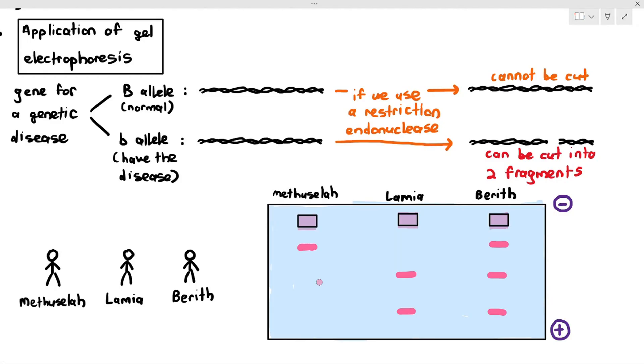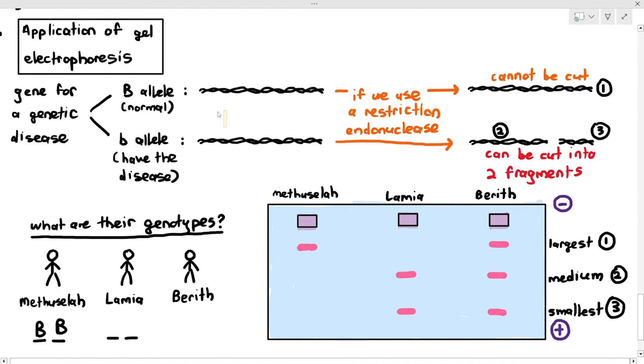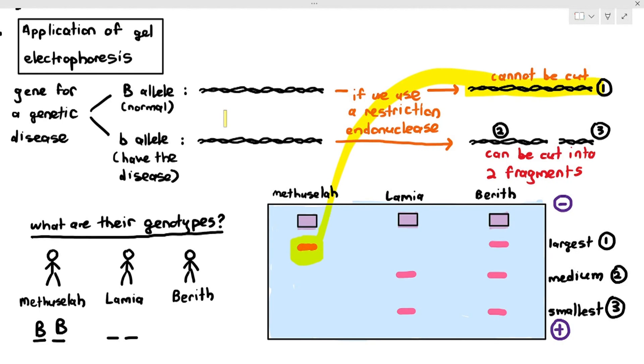What does that tell us? The one closest to the well is the largest fragment, medium, and then smallest fragment. What are the genotypes of Methuselah, Lamia, and Berith? In this case, we know Methuselah has to be large B, large B. How do we know they only have the large B allele? Because they only have that allele right there. That allele could not be cut, so that allele will get separated, and it's the largest. They only have large B, large B allele.